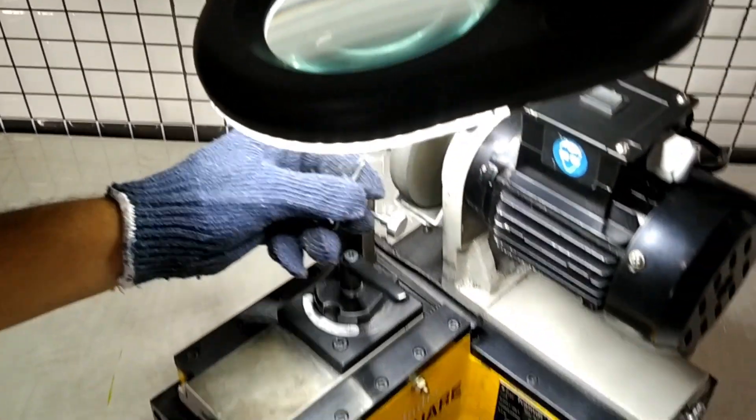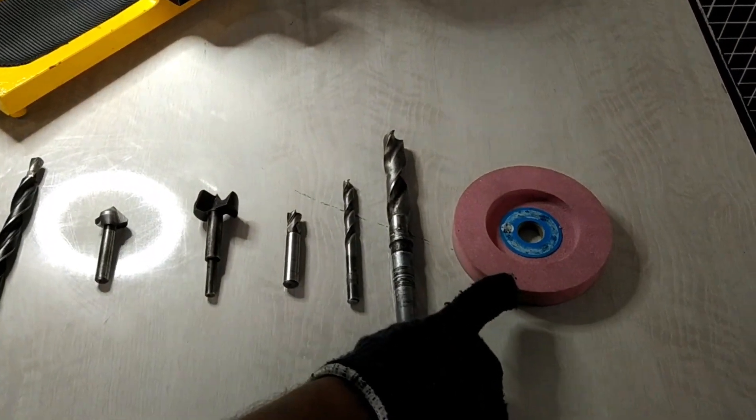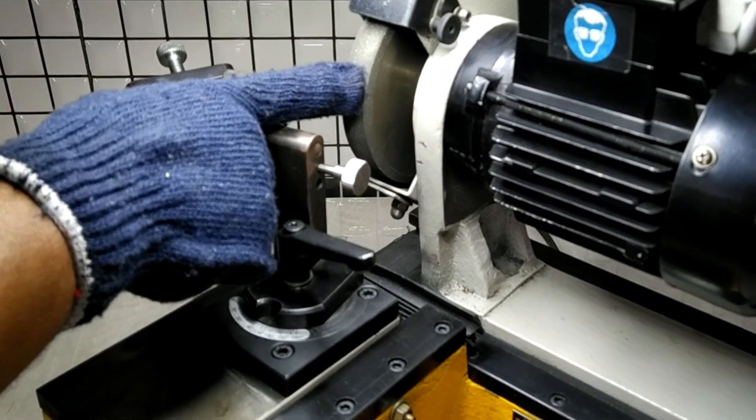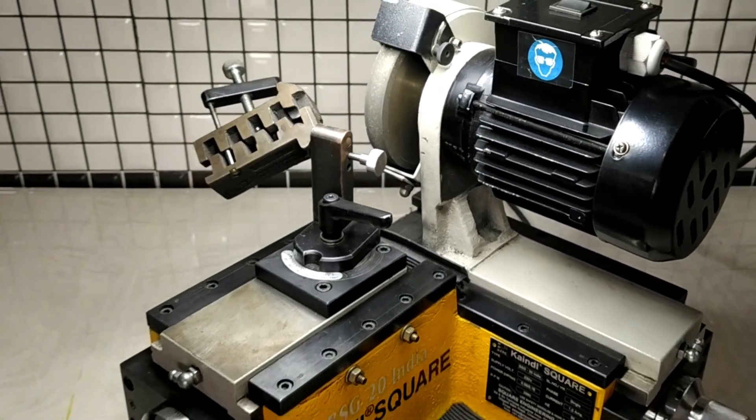HSS drill bits can be resharpened by the corundum grinding wheel provided along with the machine, and for carbide drill bits and end mills, diamond wheel is to be used which is additionally supplied by us.